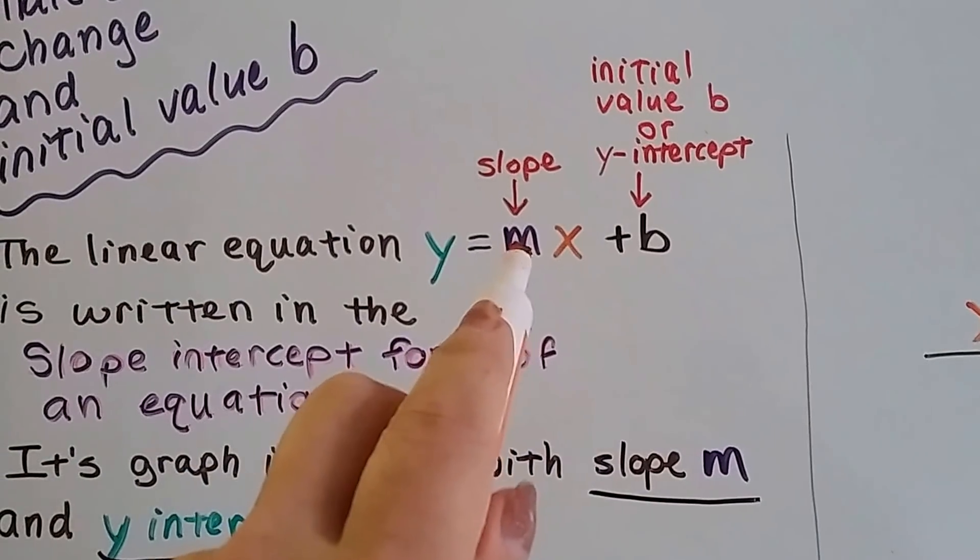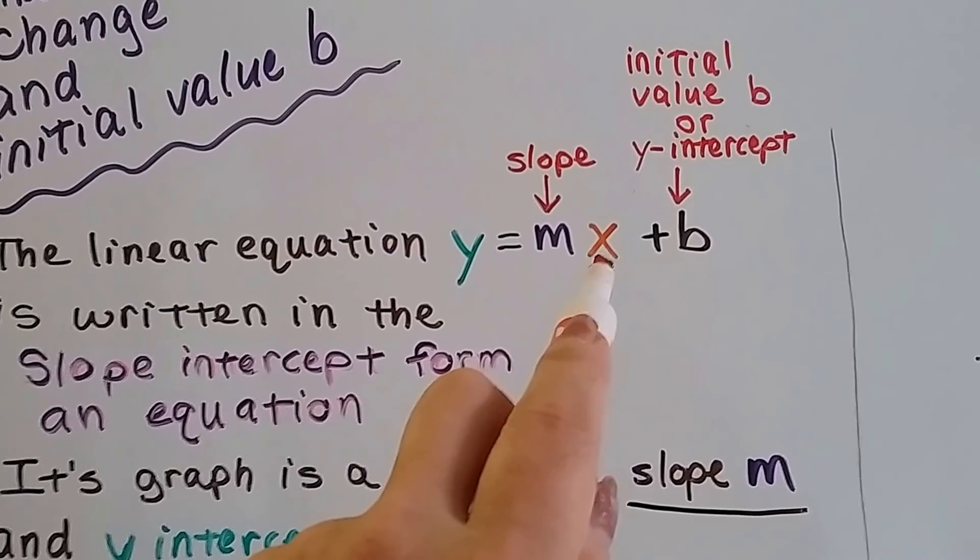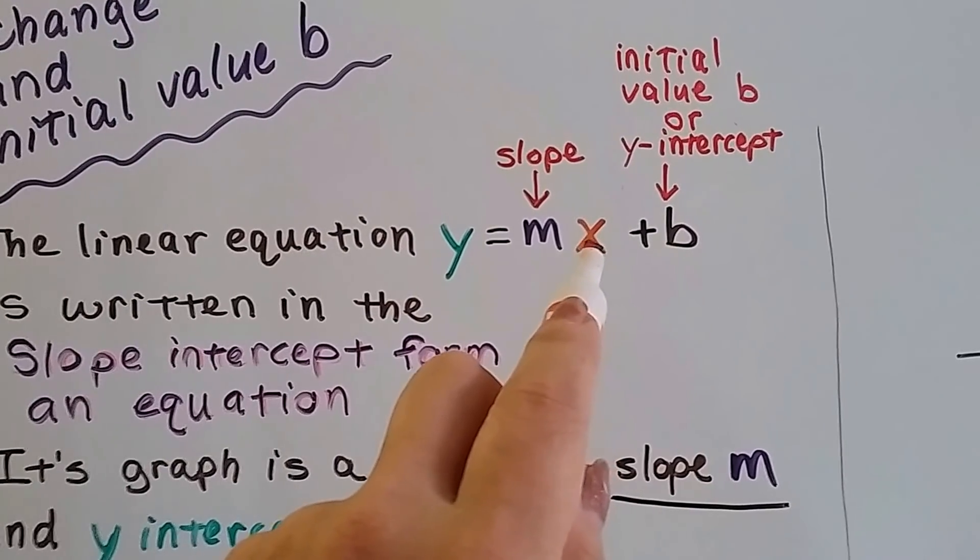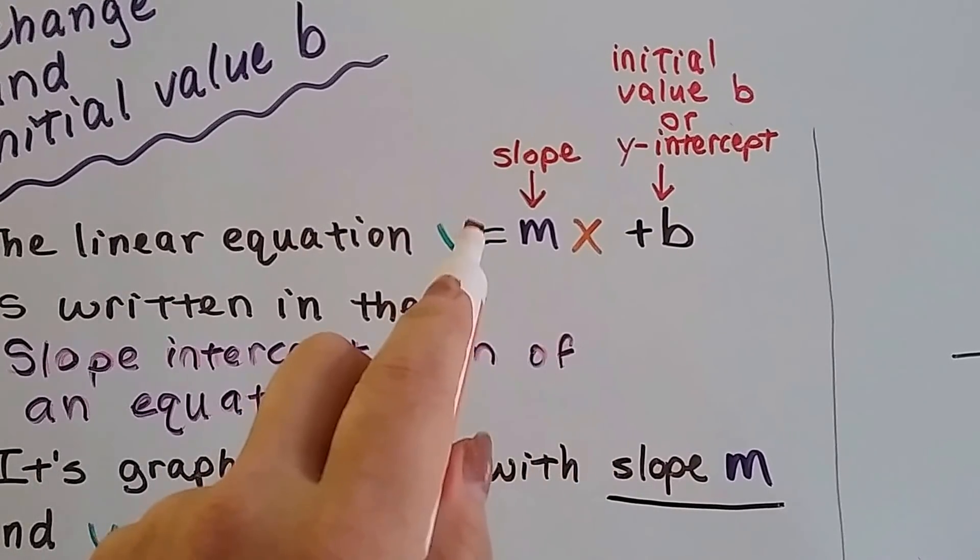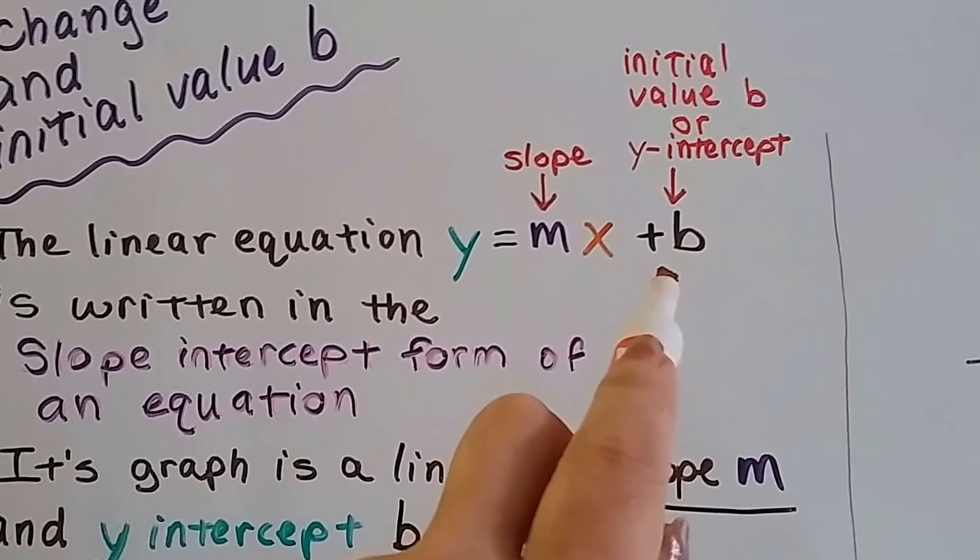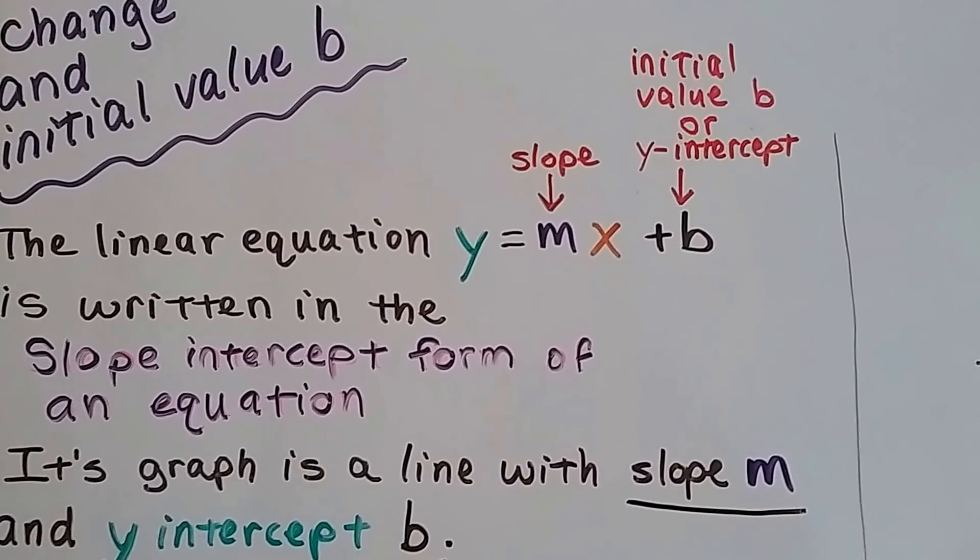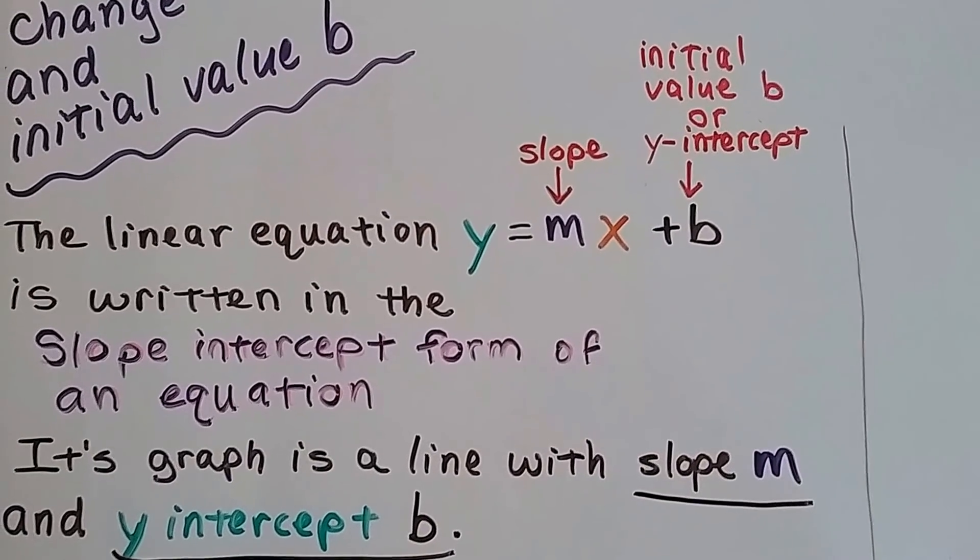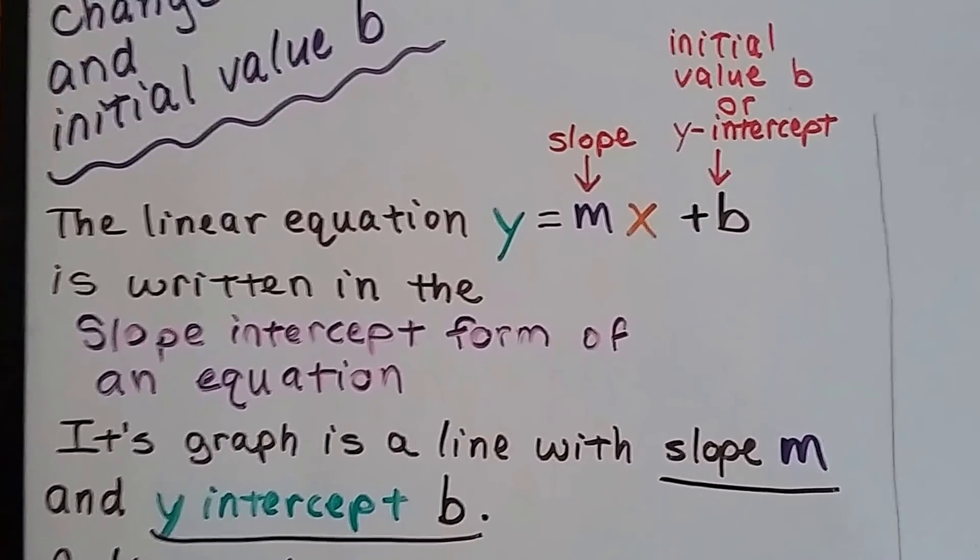So if we know that's the slope, we also know that x is an x-coordinate on a graph, and y is a y-coordinate on a graph. But this plus b, what's this plus b? Well, that is called the initial value b or the y-intercept. I'll explain.